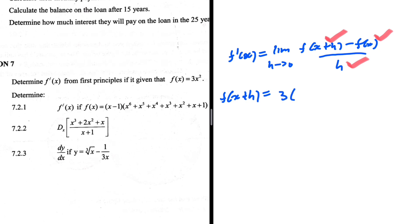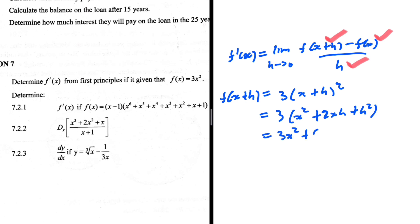So we're going to have 3 times (x plus h) squared, which expands to 3(x squared plus 2xh plus h squared), giving us 3x squared plus 6xh plus 3h squared. That is f of x plus h.